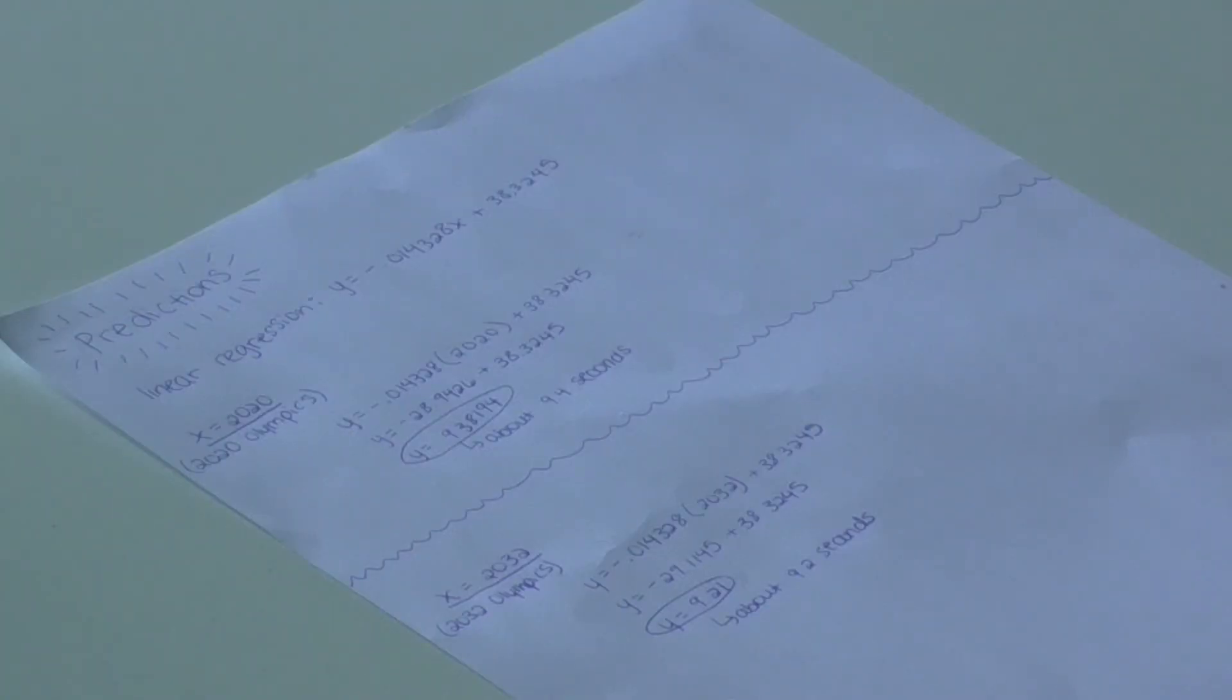We made some predictions for future Olympics and what runners will get. We inserted x values and found the corresponding y values. So we inserted 2020 for x here and for y we found that it was 9.38194 seconds, about 9.4 seconds, and here we inserted 2032 for x and we found that the corresponding y value was 9.21 seconds, so about 9.2 seconds.